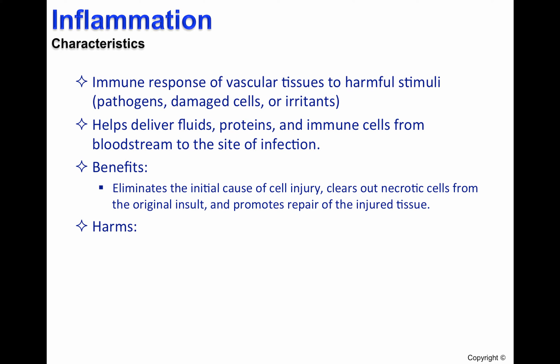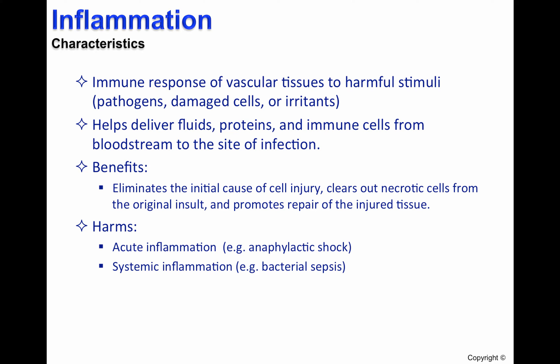Some forms of inflammation can actually harm the host. There is acute inflammation, found in anaphylactic shock; systemic inflammation, which is found in bacterial sepsis; and chronic inflammation in certain autoimmune diseases such as arthritis. All of these types of inflammation can cause tissue damage and death.